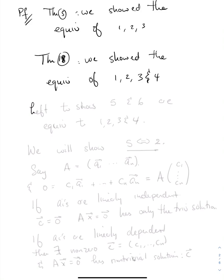So it's left to show that 5 and 6 are equivalent to 1, 2, 3, and 4. Because 1, 2, 3, and 4 are all equivalent to each other, we actually only need to show that 5 is equivalent to one of these statements and 6 is equivalent to one of these statements. So we're going to show that 5 is equivalent to 2.